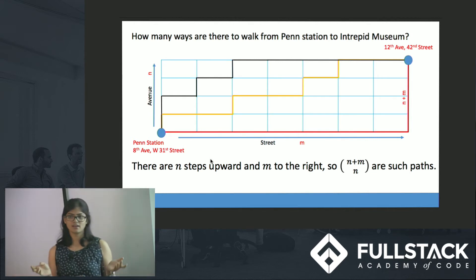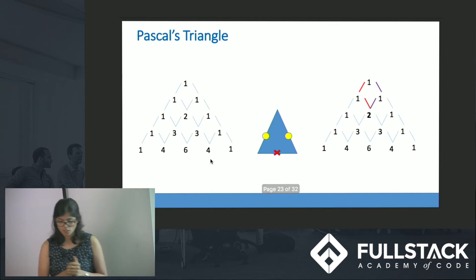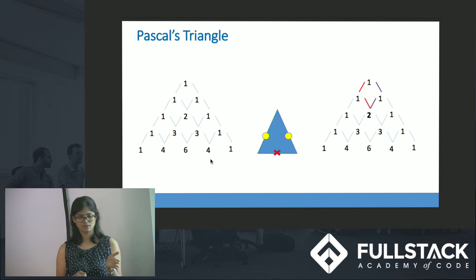Whichever path I take I have to walk n plus m steps. But the question here is how many ways I can walk to reach the destination? There are n steps upward and there are m steps towards right, so it is (n plus m) choose n is the total number of paths or total number of ways I can walk to the Intrepid Museum. We cannot use the binomial coefficient formula so how else can we solve it? We can solve it using Pascal's triangle.